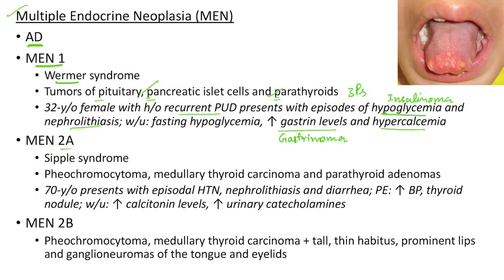MEN2A, also known as Sipple syndrome, involves pheochromocytoma, medullary thyroid carcinoma and parathyroid adenomas. Clinical case: A 70-year-old presents with episodic hypertension, nephrolithiasis and diarrhea. Physical examination shows elevated blood pressure and thyroid nodule. Workup shows elevated calcitonin levels and elevated urinary catecholamines. Episodic hypertension and elevated urinary catecholamines indicate pheochromocytoma. Thyroid nodule and elevated calcitonin indicate medullary thyroid carcinoma. Nephrolithiasis indicates parathyroid adenoma. This is a classic case of MEN2A.